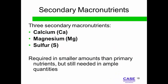Secondary macronutrients are needed in slightly lower amounts and typically affect how a plant utilizes other nutrients. For example, calcium has a relationship with nitrogen metabolism, and magnesium affects both phosphorus and iron utilization.